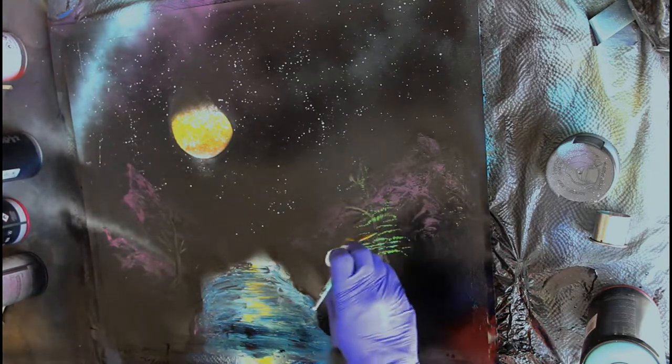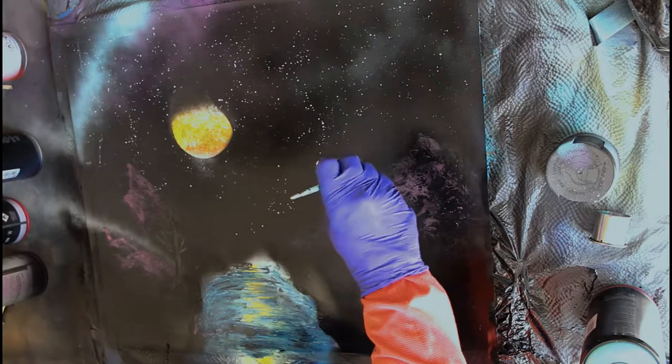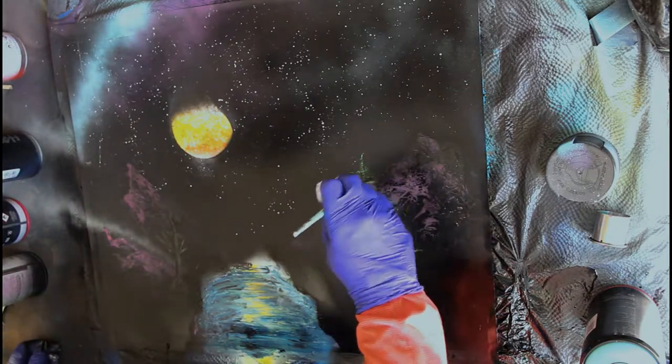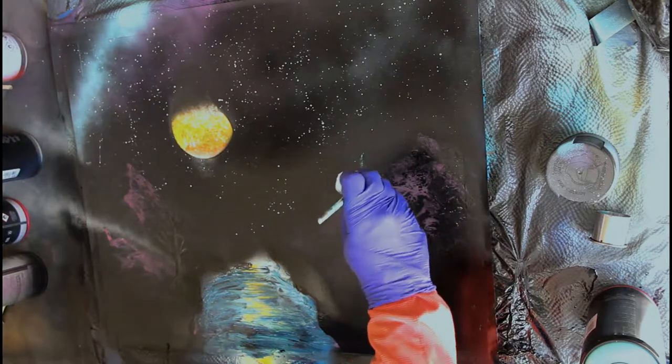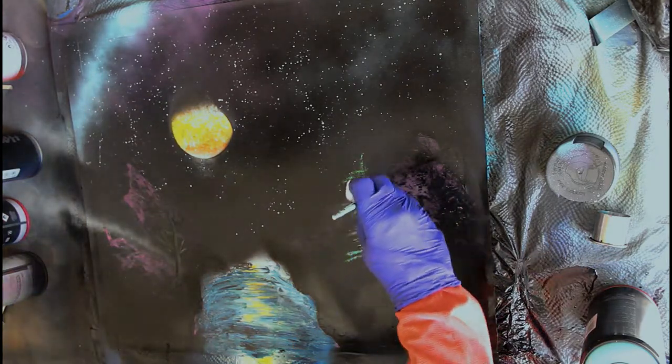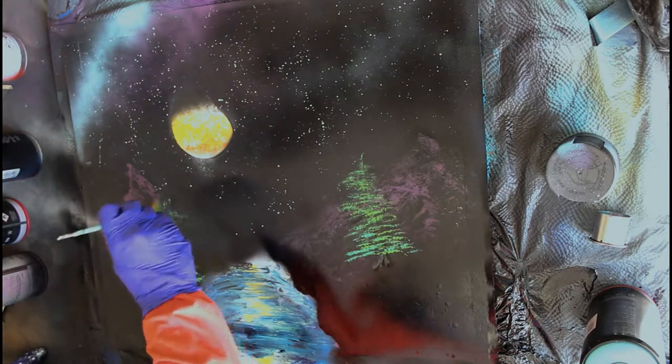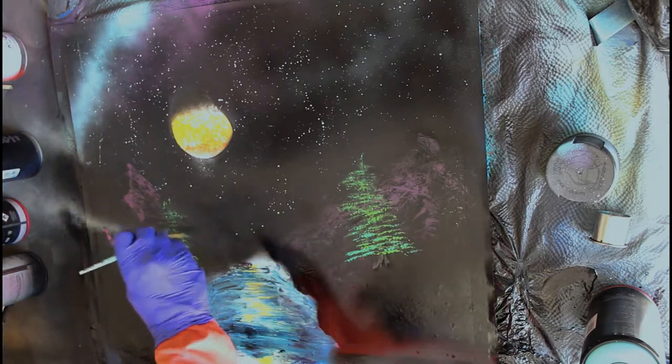To put in the leaves, I had two different shades of green that I sprayed out on that scrap board and I used a little fan brush to just kind of dot them in. And then after I put in all the lighter green I went back with the same fan brush and dotted in some black.